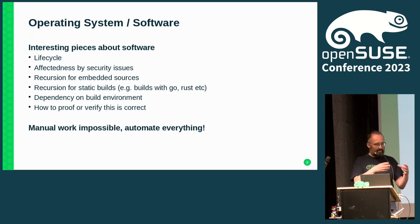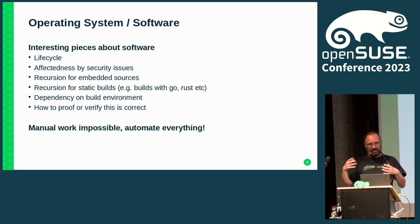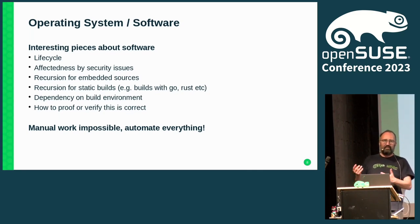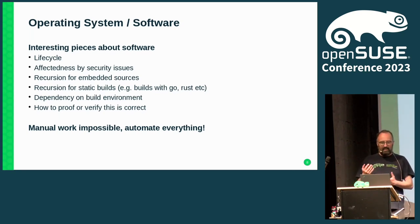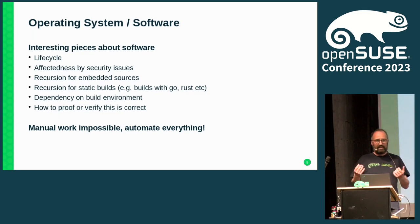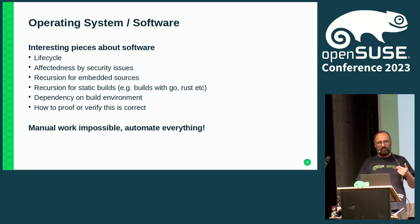These days, not every package is from one source — packages can embed multiple sources or are built with multiple static libraries. There is also recursion for static builds with new-style compilers like Go or Rust. It always depends on where something was built — if something was built on SLES 8, it's a different thing than if it was built on SLES 15 or OpenSUSE Tumbleweed. And increasingly important: how to prove to others that what you deliver as software is correct and was built the way you said. With the amount of software and computers, manual work is nearly impossible — you need to automate everything.